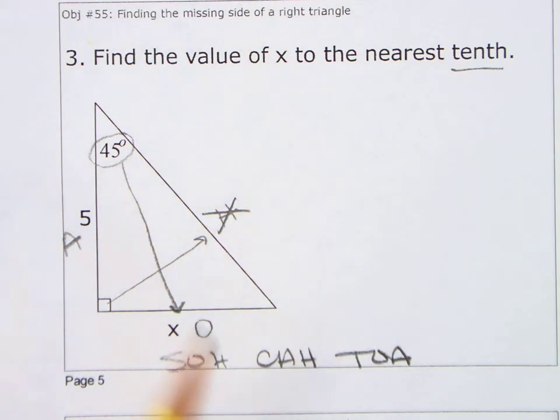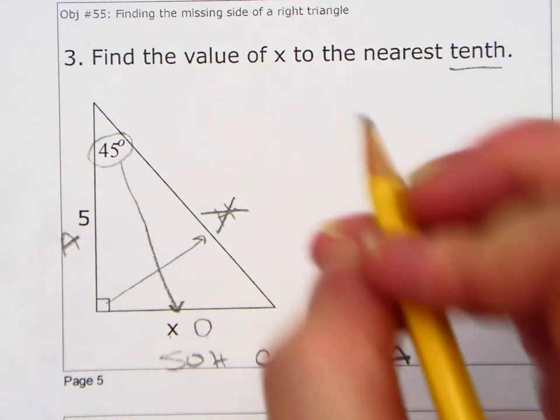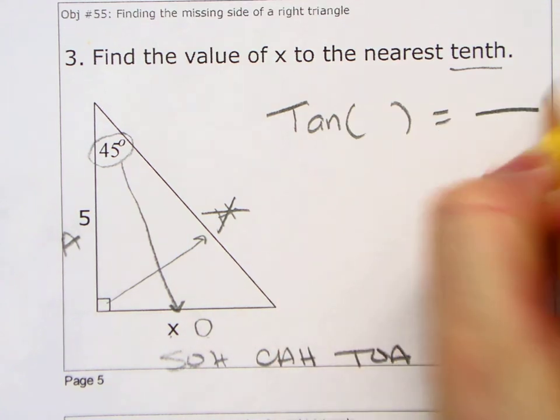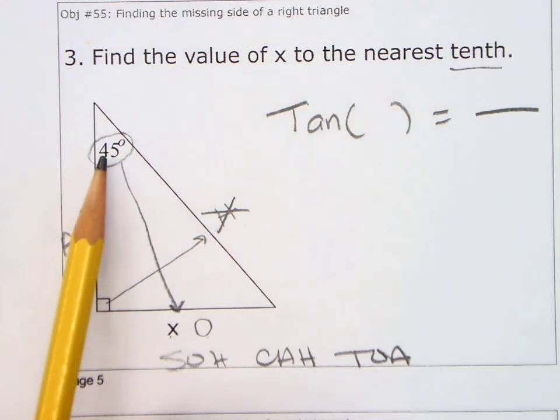Two has something next to it. Even though one's an X, we're still going to count that. So O and A. Which one's O and A? That's tan. So we're going to do tan of equals. Now, tan of what? Tan of the angle.